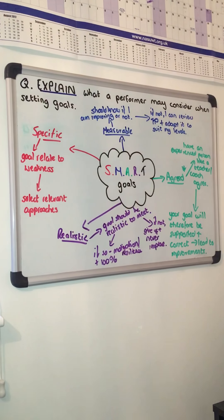And that is a potential fifth mark there. The question is set at four marks, so you've got your basic four marks covered. But if you want to leave the examiner with no doubt, go that extra mile and give that one other impact. And that's how we answer and explain what a performer may consider when setting goals.